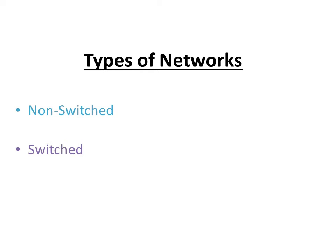First of all, there are two kinds of networks: non-switched and switched. As the names clearly show, the difference between the two relates more directly to what kinds of network architectures they use and how they differ in their working.